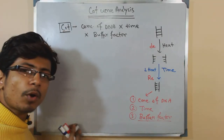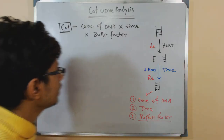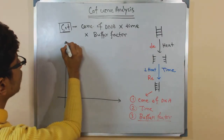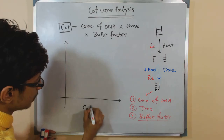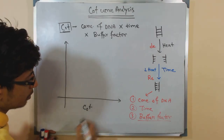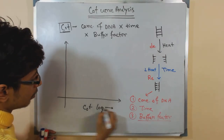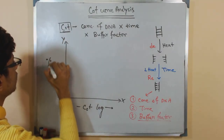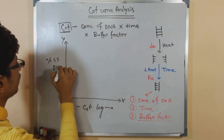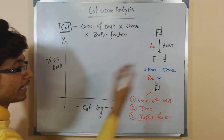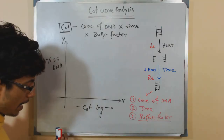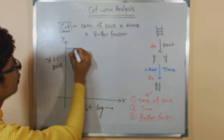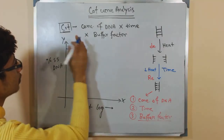If we put a graph together, on the x-axis we plot the log of the cot value, and on the y-axis we plot the percentage of single-stranded DNA that was present before the experiment. The curve shows what happens as re-annealing proceeds over time.